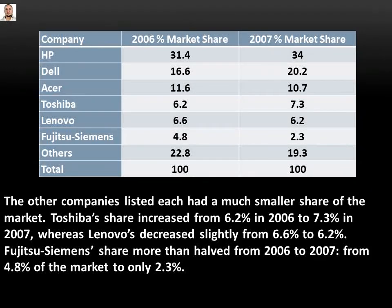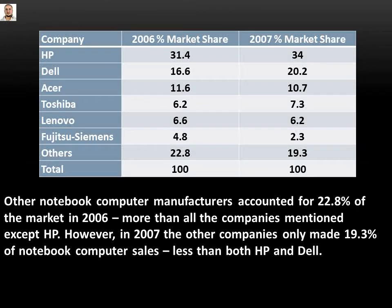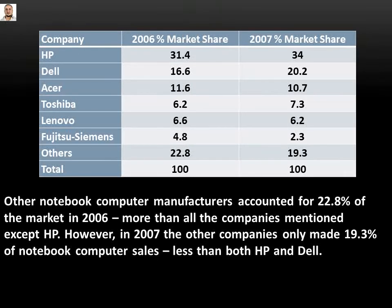Fujitsu Siemens' share fell more than half from 2006 to 2007, from 4.8 percent of the market to only 2.3 percent. Other notebook computer manufacturers accounted for 22.8 percent of the market in 2006 — more than all the companies mentioned except HP. However, in 2007 the other companies made only 19.3 percent of notebook computer sales, less than both HP and Dell.